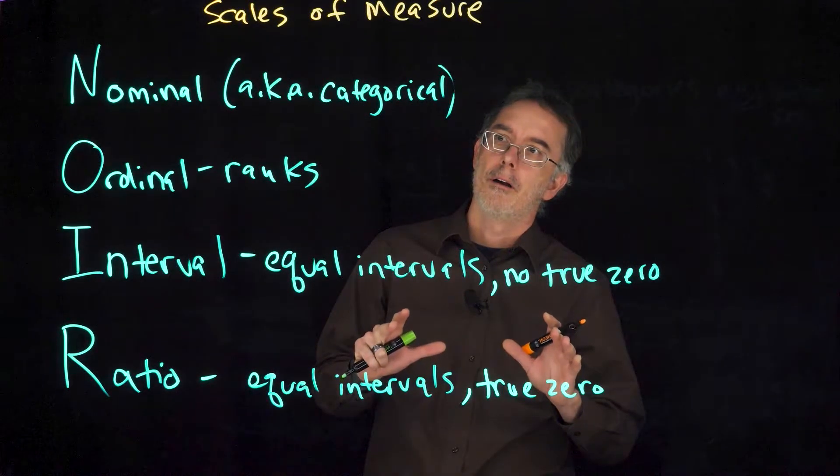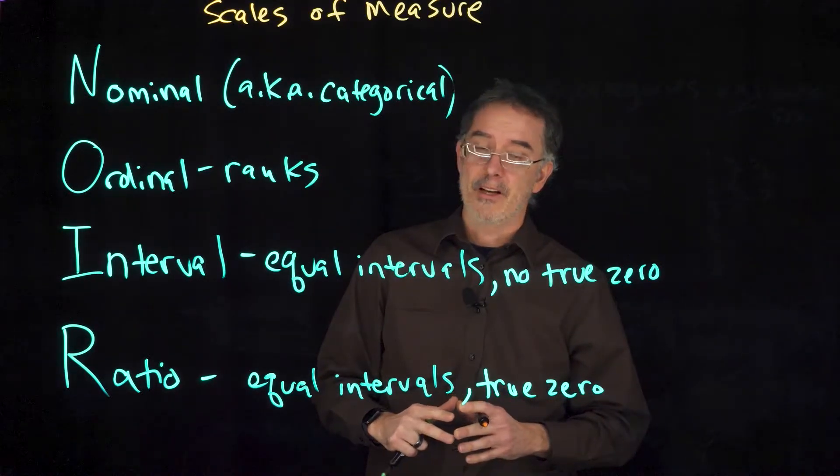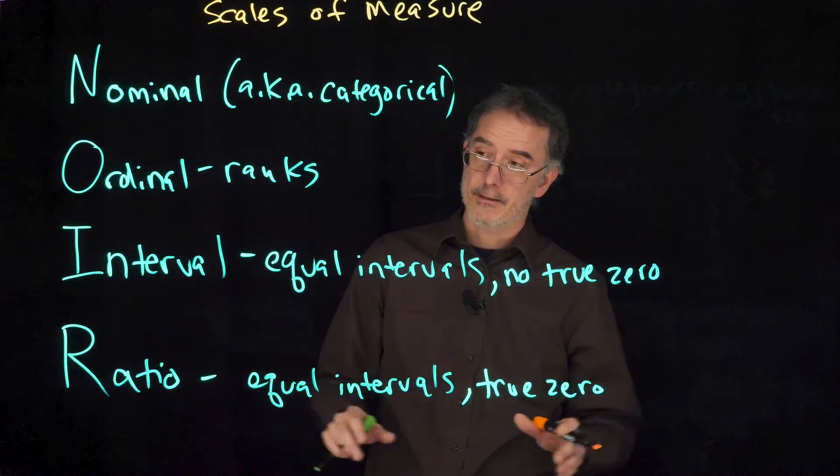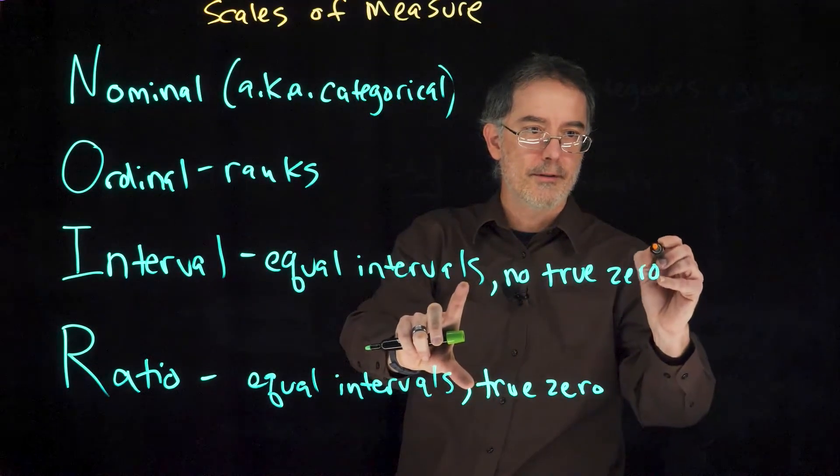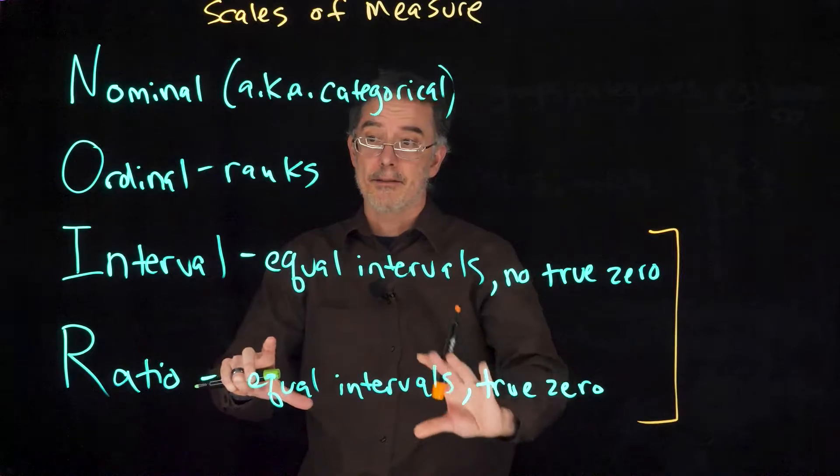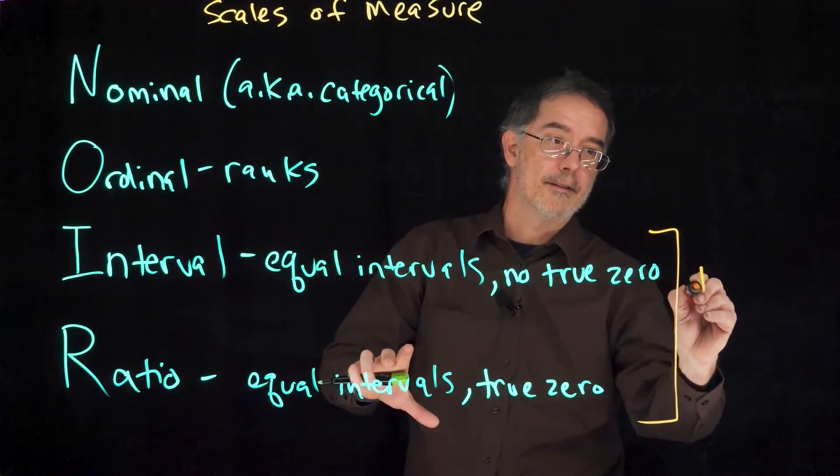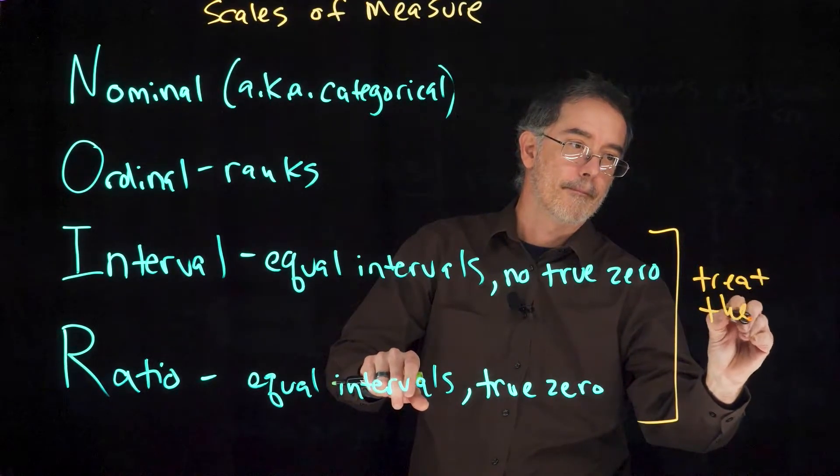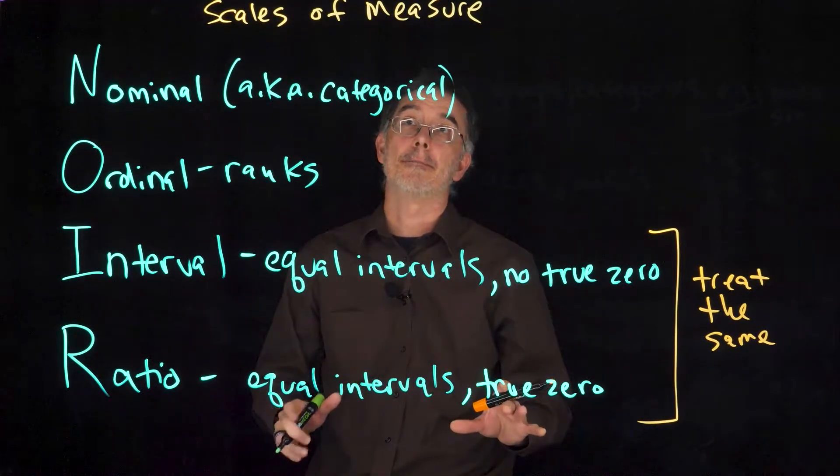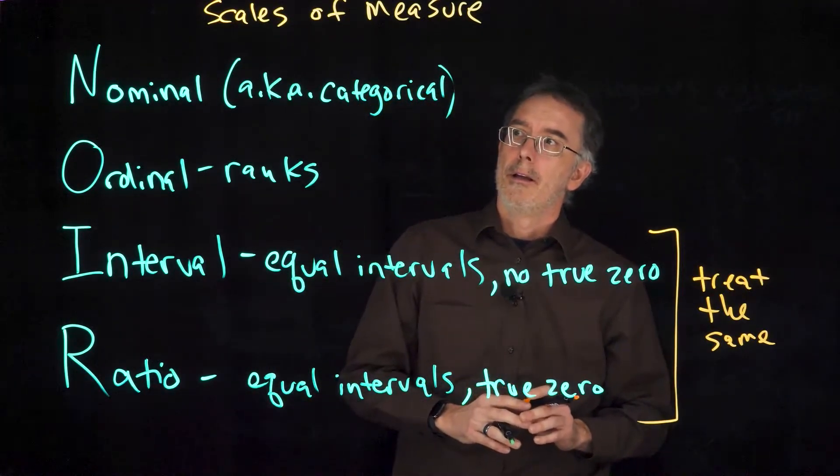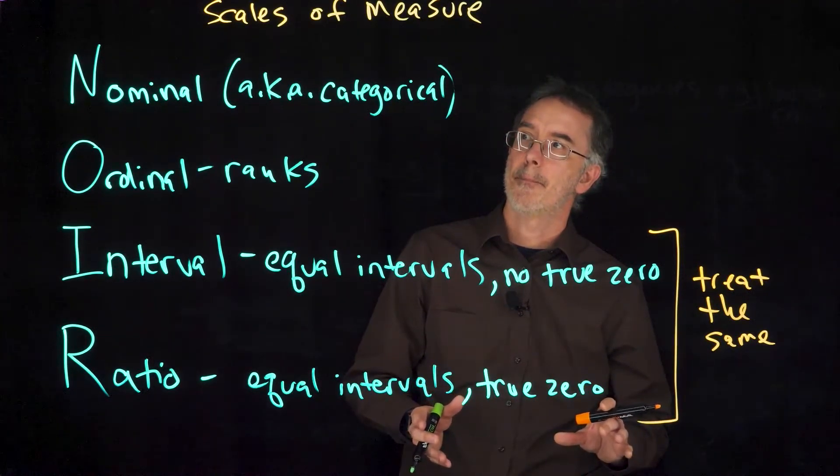I want to point out a couple more things about scales of measure, and how they relate to research and statistics. The first thing I want to point out is that interval and ratio variables. For a class like this, you will need to be able to tell for any variable whether it is interval or ratio. But when we are doing statistics, we actually treat these the same. We will talk more about that a little bit later on.